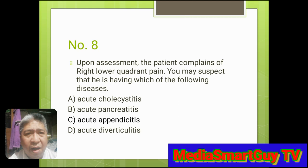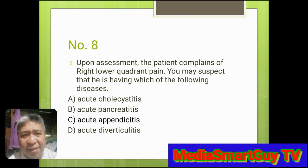Number 8. Upon assessment, the patient complains of right lower quadrant pain. You may suspect that he is having which of the following diseases? A. Acute cholecystitis. B. Acute pancreatitis. C. Acute appendicitis. D. Acute diverticulitis. Answer: C. Acute appendicitis.